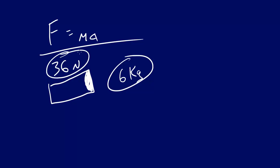And we had the force, which was this right here, and we had the mass of the object or the potato, which was six kilograms. So 36 newtons, which would be the force, equals the mass, which would be six kilograms, times acceleration. And that's what we were trying to figure out.